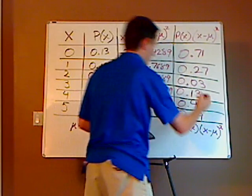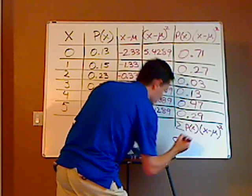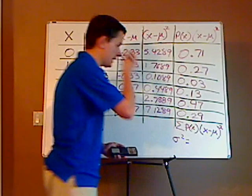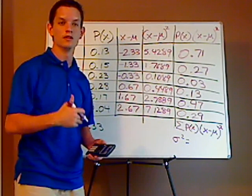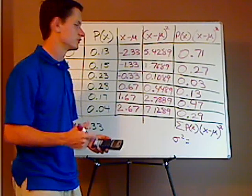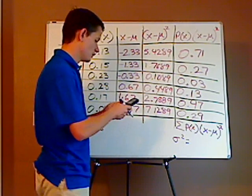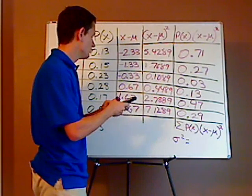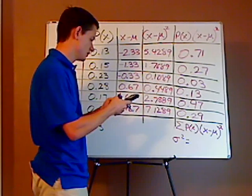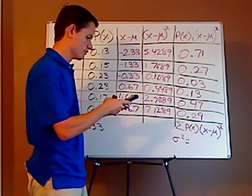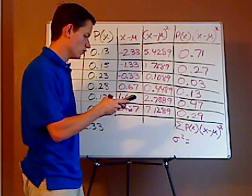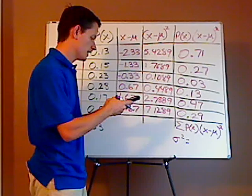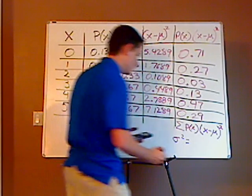Next, what I want to do is get the variance, which is sigma squared. And I'm not going to round in this step. It's only until I take the square root of the variance that I'll round to one decimal place. So I just add these up: 0.71 plus 0.27 plus 0.03 plus 0.13 plus 0.47 plus 0.29, and that gives you 1.9.